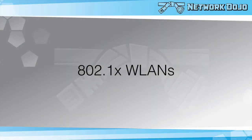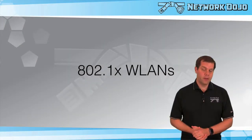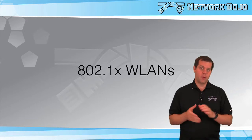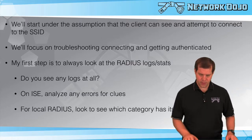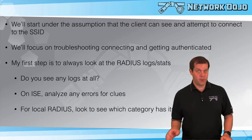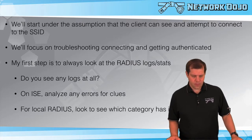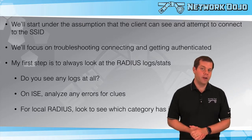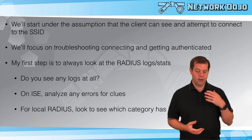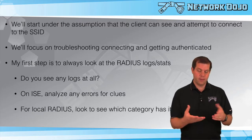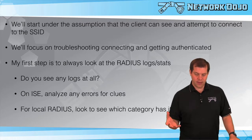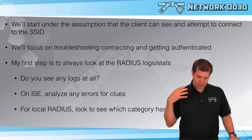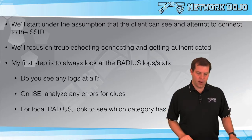802.1x WLANs are definitely the more prominent WLANs you'll be running into in the autonomous world, so it's the one we want to put the most effort into understanding how to troubleshoot. It also has the most to it. We'll start with the assumption that your client can see and attempt to connect to the SSID, focusing on the getting connected and getting authenticated process.